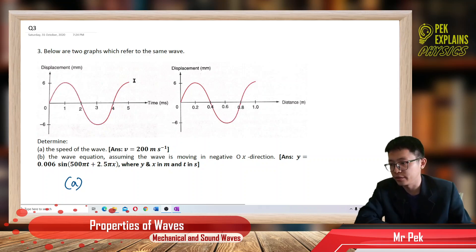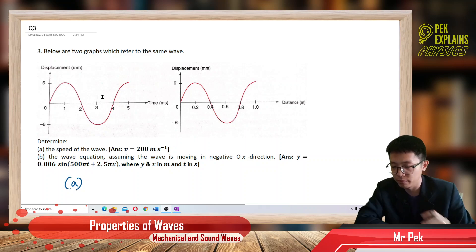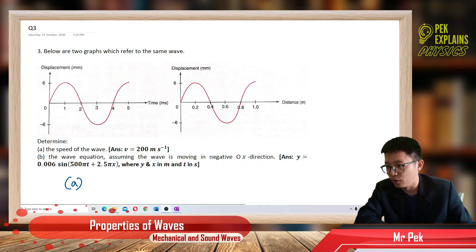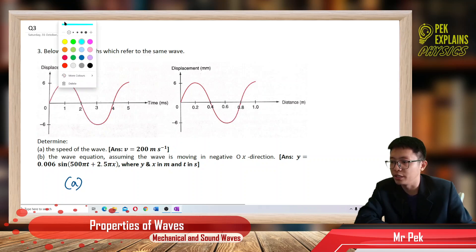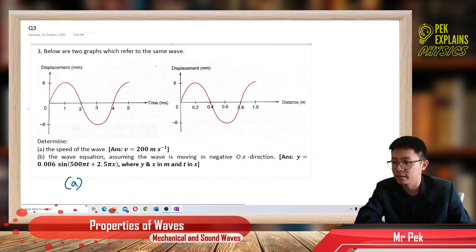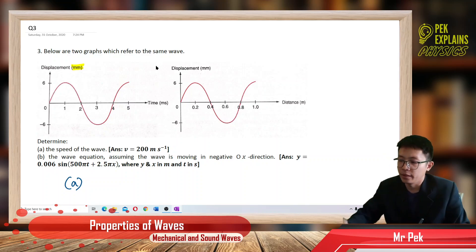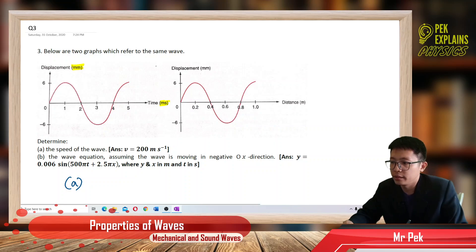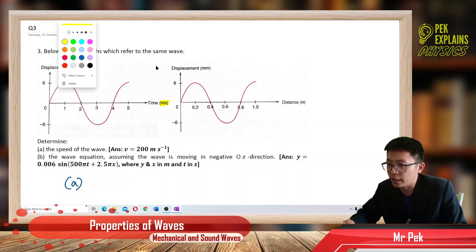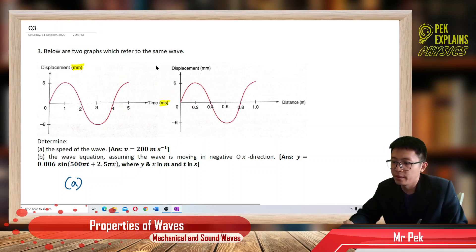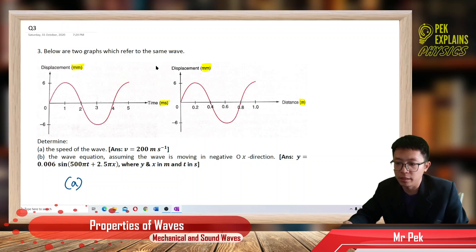First, we must understand this graph — what information can we extract from these two graphs? Pay attention to the unit of the axis. This axis is in millimeter, and this one is in meter. This one is millimeter, this one is meter.